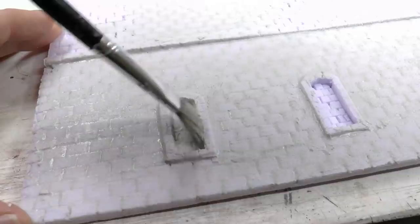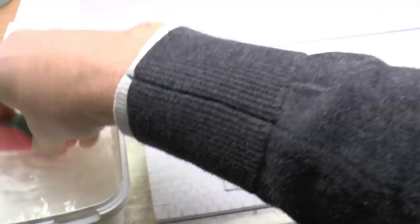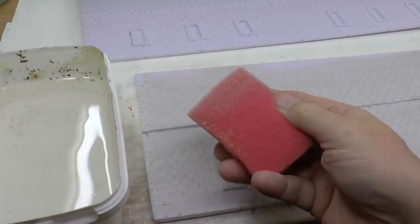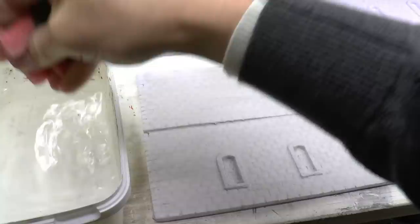All of the plaster that is still on top of the stone is removed using a wetted sponge. I just clean the entire surface with the wetted sponge.